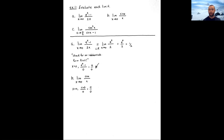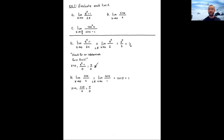Applying L'Hôpital's Rule, differentiate numerator and denominator individually: sin(x) differentiates to cos(x), and x differentiates to 1. The resulting limit is no longer indeterminate. Plugging in x = 0 gives cos(0), which is a basic trig value equal to 1. So the limit of sin(x)/x as x approaches 0 equals 1.